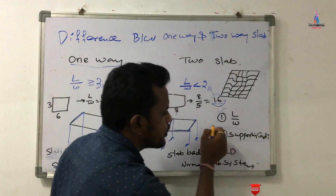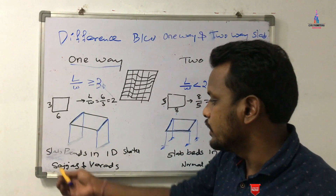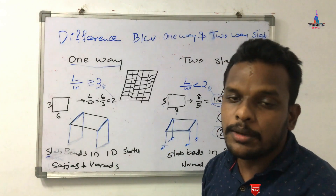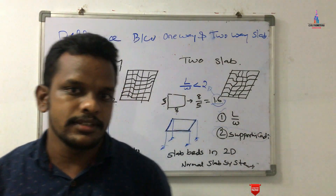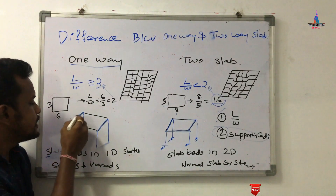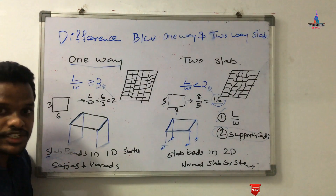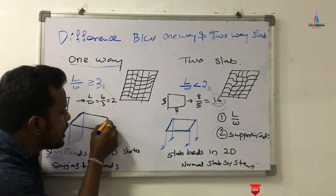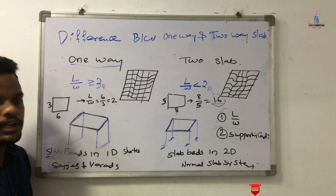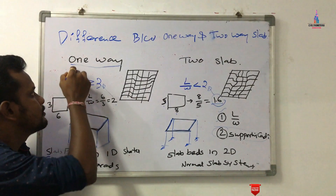The second factor is the supporting condition or supporting member. For a one-way slab system, the supporting members exist in opposite directions only. Here the slab is supported by beams and vertical columns on two opposite sides only, so we call it a one-way slab system.